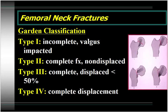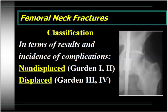The Garden classification scheme for femoral neck fractures is important to understand, though it's less commonly used for practical considerations today. Type 1 is an incomplete valgus-impacted fracture. Type 2 is a complete fracture that is non-displaced. Type 3 is a complete fracture displaced less than 50%, and type 4 is complete displacement of the femoral neck. In terms of results and complications, it's most important to talk about femoral neck fractures simply as displaced or non-displaced — Garden 1 and 2 are non-displaced, Garden 3 and 4 are displaced.